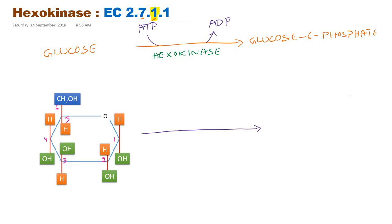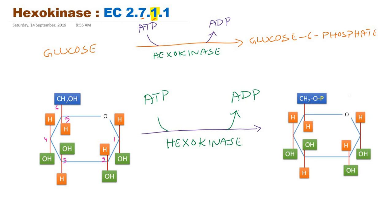In this reaction catalyzed by hexokinase, ATP donates its phosphate group to glucose and is converted to ADP. Glucose is then converted to glucose-6-phosphate. At the sixth carbon of glucose there is a CH₂OH group containing the hydroxyl or alcohol group, which accepts the phosphate group donated by ATP. So glucose is converted to glucose-6-phosphate. Hexokinase is a transferase where the functional group transferred is the phosphoryl group.